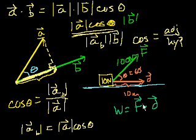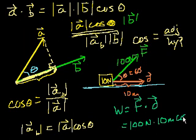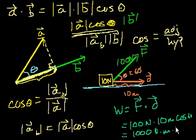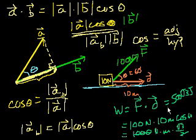Using the dot product of the force and the distance vector, we know the definition is the magnitude of the force vector, which is 100 newtons, times the magnitude of the distance vector, which is 10 meters, times the cosine of the angle between them — cosine of 60 degrees. So that's equal to 1,000 newton meters times cosine of 60. Cosine of 60 is square root of 3 over 2. So the 2 cancels and it becomes 500 square roots of 3 joules — whatever that is, it's 700 or 800 something.